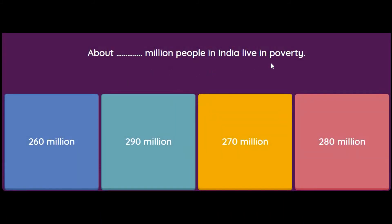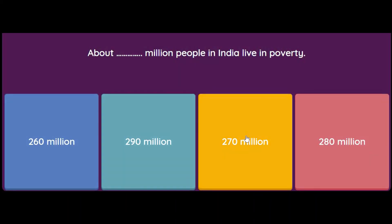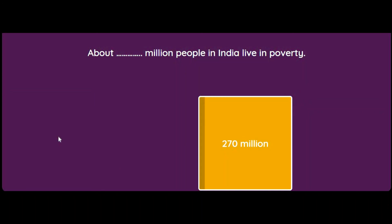About how many million people in India live in poverty? 260, 290, 270, or 280 million? The correct answer is 270 million. Referring to the book, the number of poor in millions in 2011–12: rural were 217 million, urban 53 million, combined it is 270 million. So it has declined from 404 to 270 million.